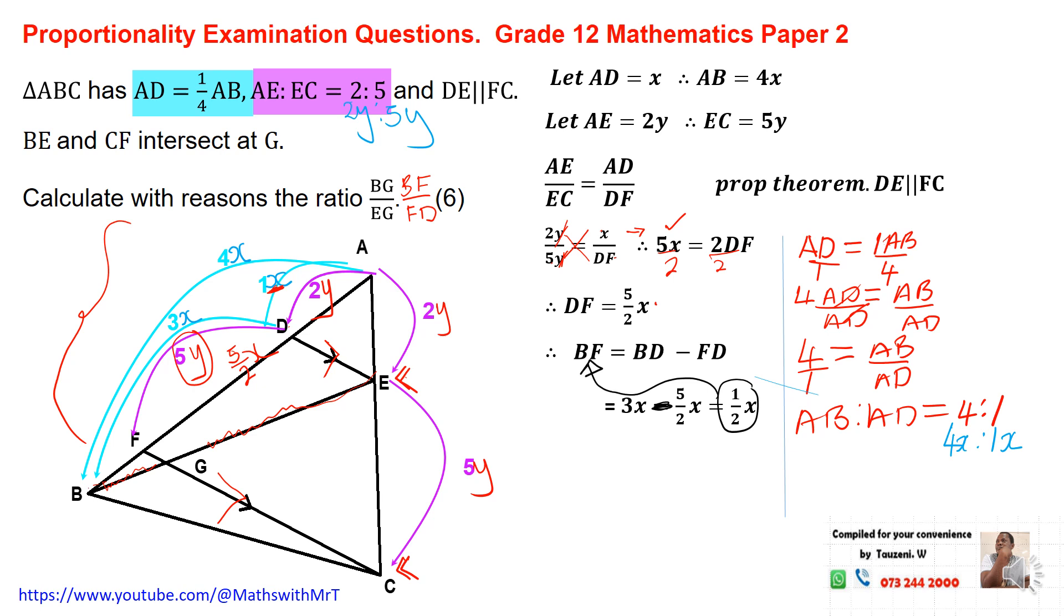Now we can conclude our answer. So the answer for this question is basically done. BG over EG is equal to BF over FD. This is the proportionality theorem. Then we substitute the value of BF, which is half X, divided by the value of FD, which is 5 over 2X. The answer will be 1 over 5. This X and this X cancel each other. Then our question is answered.